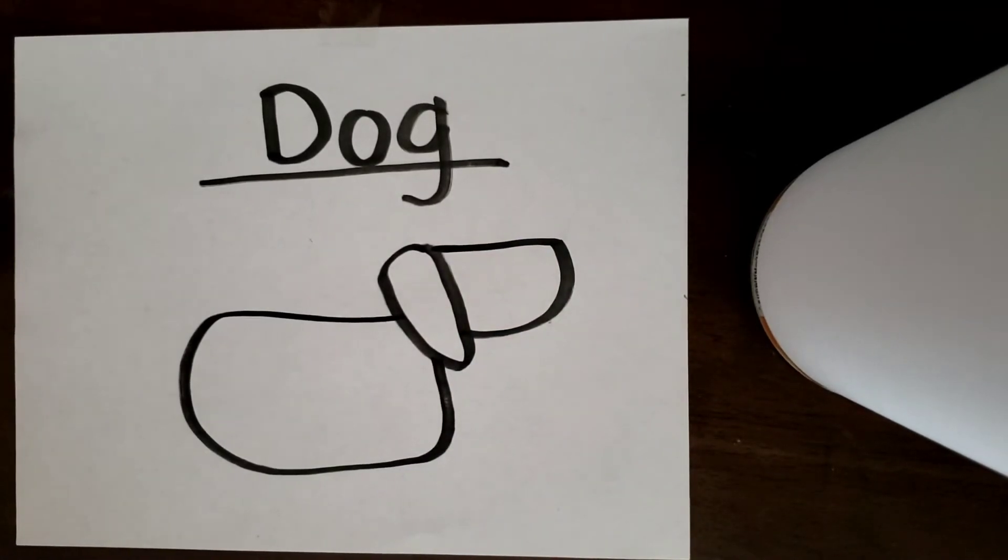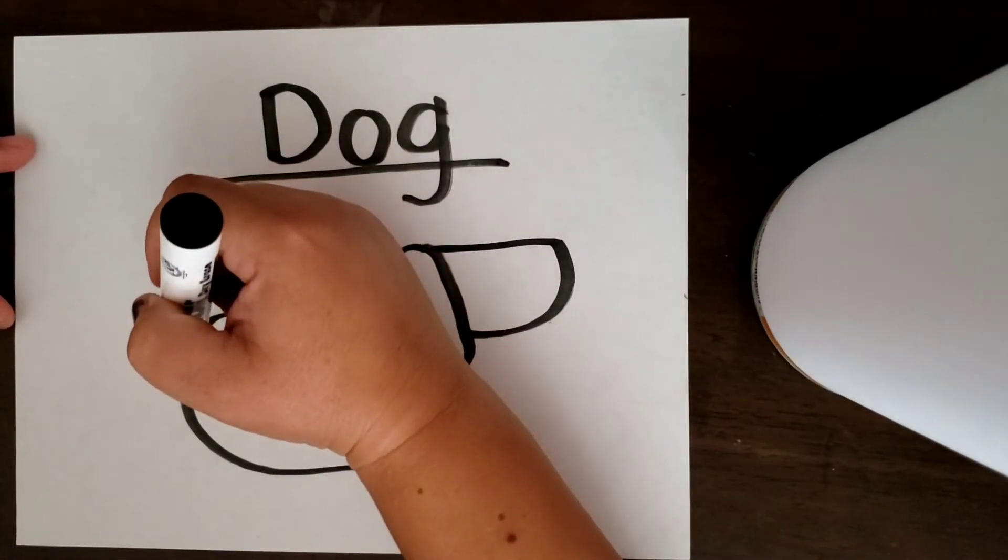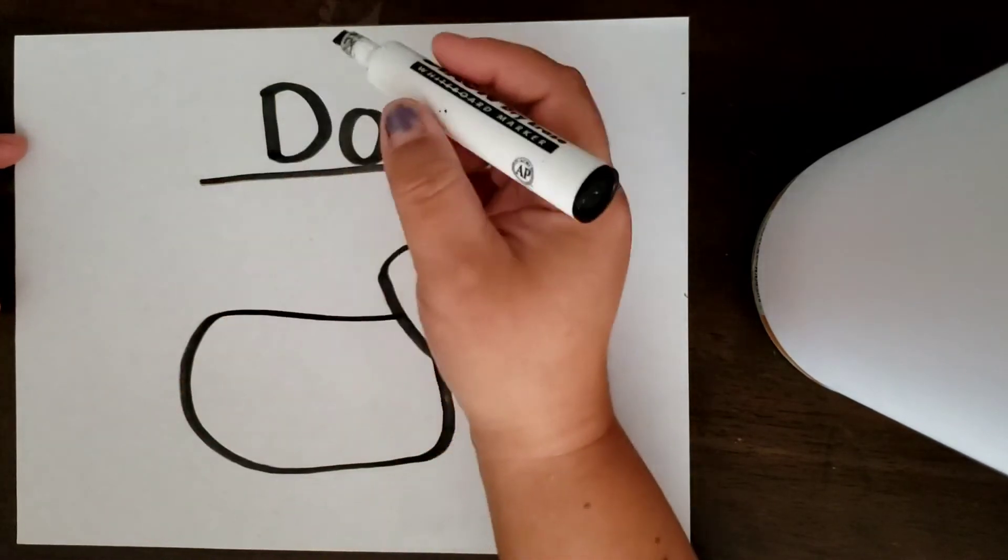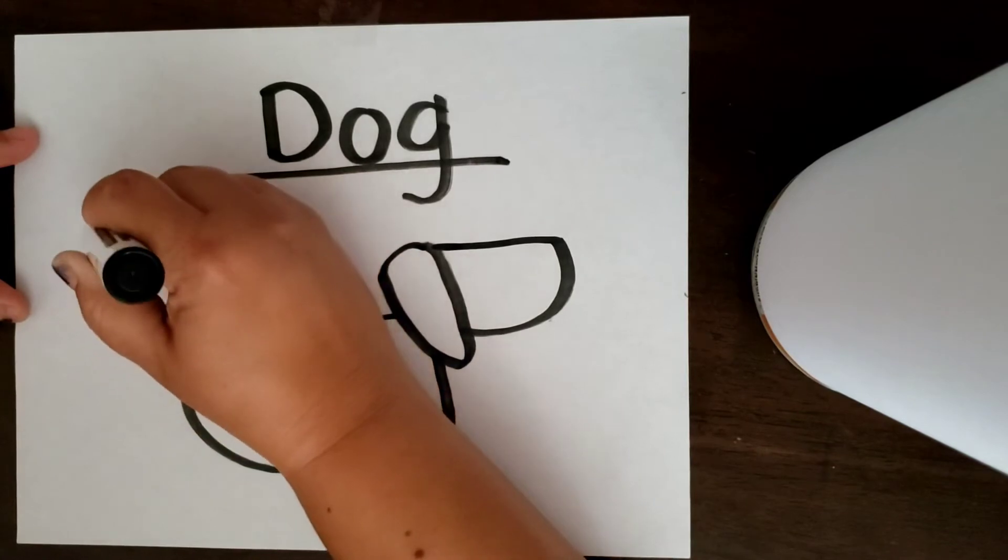All right, now let's do his tail. You can do a big tail or a little tail. Your tail can go up, out, or down. Whichever you prefer. I'm going to go up.